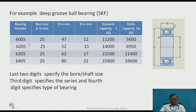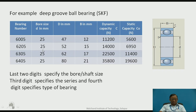Bearing number 6005: the last two digits are 05, and multiplying by five gives a bore size of 25 mm. For last two digits 04 onwards, multiply by five to get the bore size. Below that: 03 gives 17 mm, 02 gives 15 mm, 00 gives 10 mm. So 10, 12, 15, 17 mm are fixed steps for last two digits from 00 to 03, and from 04 onwards you multiply by five to get the bore or shaft size.